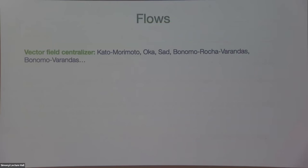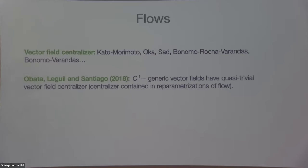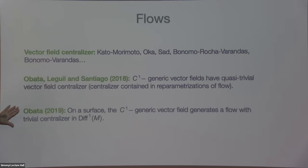You might ask: what about flows? There are some related results. If you have a vector field, you can look at all the flows that commute with it — that's a much easier question because commuting flows, like Hamiltonian flows, and even commuting vector fields, you can say quite a bit since you have Lie brackets. There is more serious work for the vector field centralizer. This is kind of the optimal result, but only on surfaces. The question for flows in general is quite open.